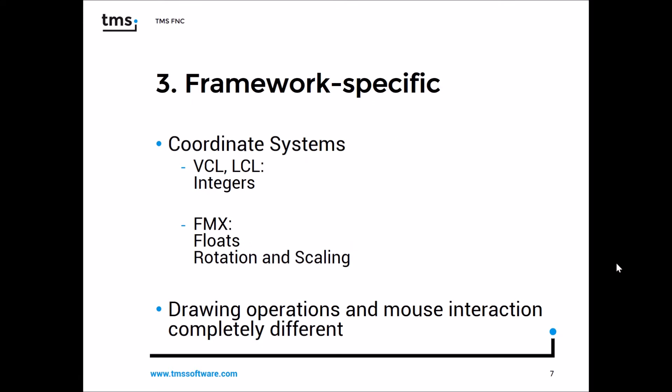Let's look at the different coordinate systems. In VCL and Lazarus, coordinates are integers; in FireMonkey you use floats. FireMonkey also includes support for rotation and scaling. Fortunately, all coordinate systems share the same origin — the top-left corner is always zero, zero. Drawing operations and mouse interactions, however, are completely different across all the frameworks.